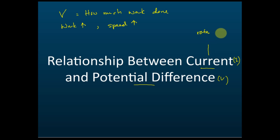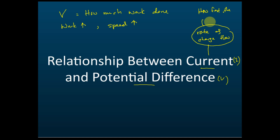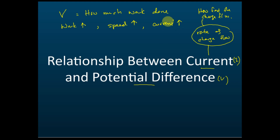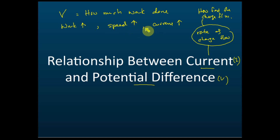Current is the rate of charge flow. Rate of charge flow means how fast the charge flows. So if the speed of the charge is high, then the current is high, because current measures how fast the charge flows. So if the potential difference is high, it can do more work, the charge flows faster, and therefore the current is high.